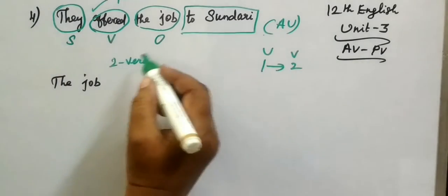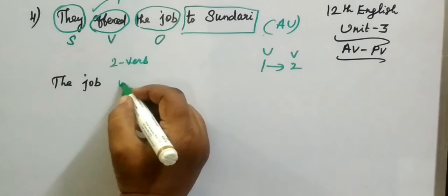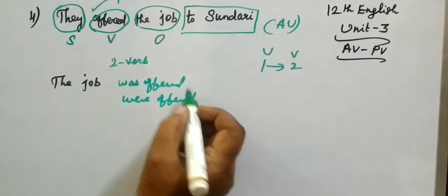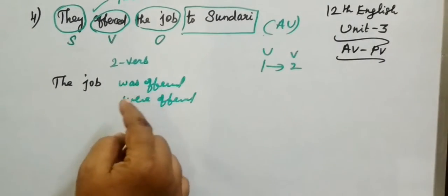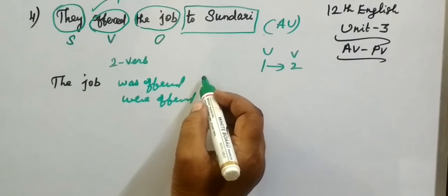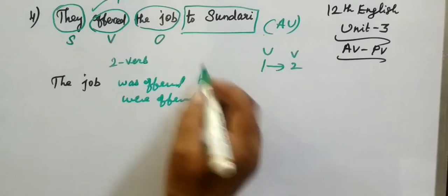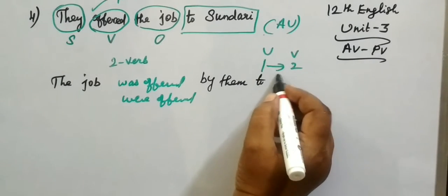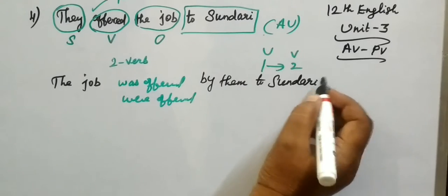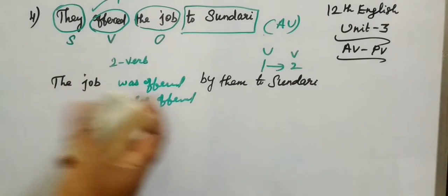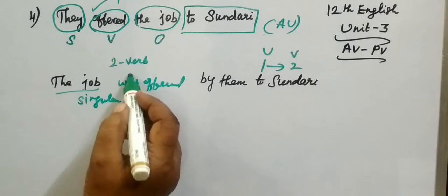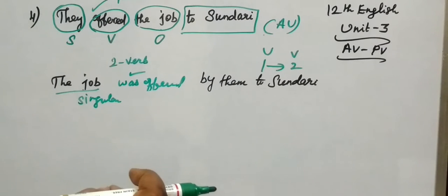So here you are writing 'was offered' or 'were offered.' Because the object 'the job' refers to singular, you select 'was.' The answer is: The job was offered by them to Sundari.